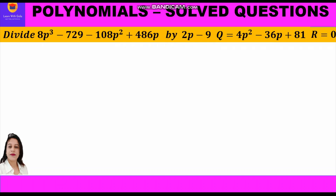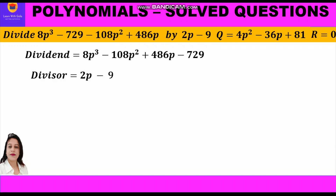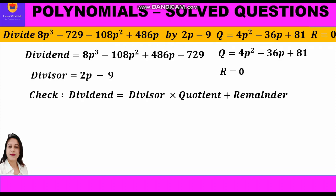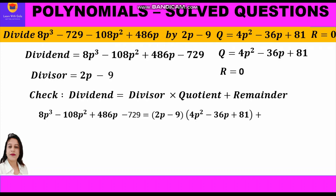Let us check the answer using the division algorithm. We again need all four elements: dividend, divisor, quotient, and remainder. The division algorithm states dividend = divisor × quotient + remainder. Substituting: 8p³ − 108p² + 486p − 729 = (2p − 9)(4p² − 36p + 81) + 0.